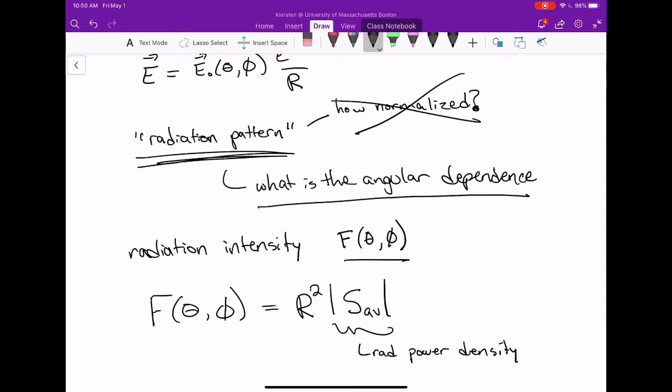But by having this R squared in the front, we're removing all the R dependence from it. And so that'll only be a function of angle. You can also express that as, as I wrote above, that electric field term, magnitude squared divided by 2 eta. Those two things are the same. Both of them get you the radiation intensity, which is only a function of angle.